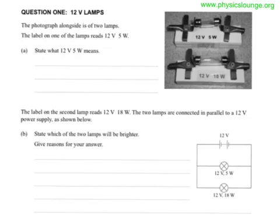So the 2012 electricity paper for level 2 physics, question 1, 12 volt lamps. The photograph is of 2 lamps, the label on one side reads 12 volt 5 watts.